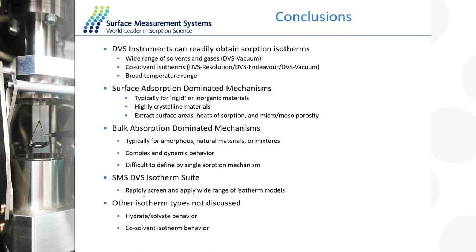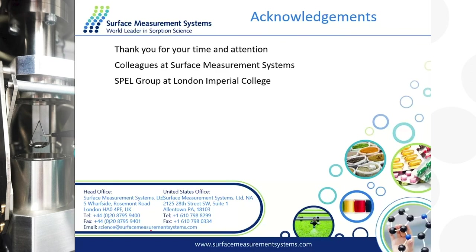The SMS does have an isotherm suite to help rapidly screen a wide range of isotherm models — though not all of them. The application science team is always open to expanding the software's functionality if you have suggestions. There are also other isotherm types not covered today, such as hydrates, solvates, and co-solvents. Thank you for your attention, and thanks to colleagues at Surface Measurement Systems and the Particle Engineering Lab at Imperial College London who helped with the data and slides shown today.